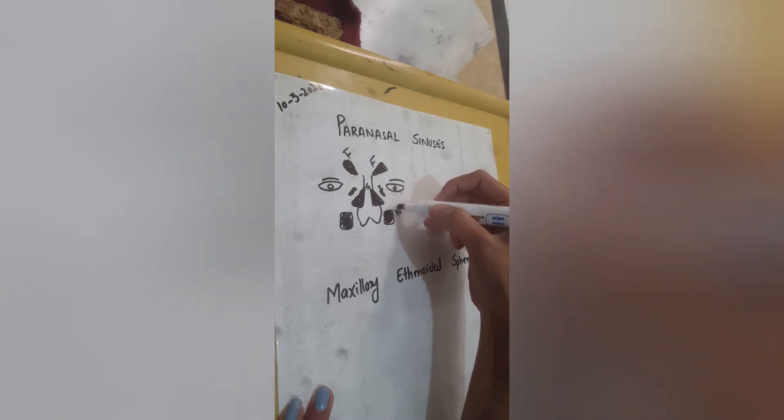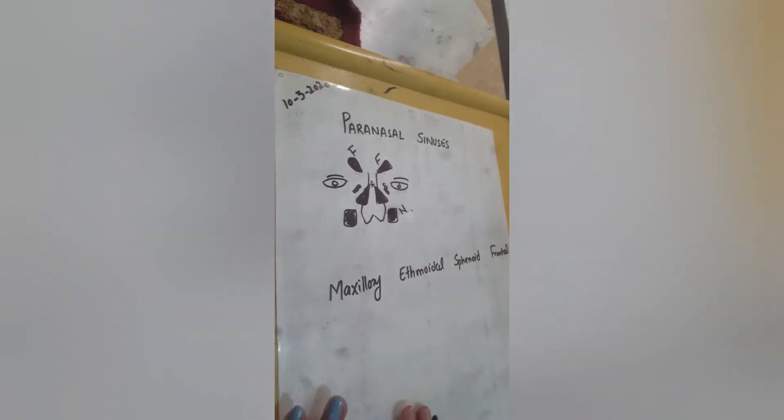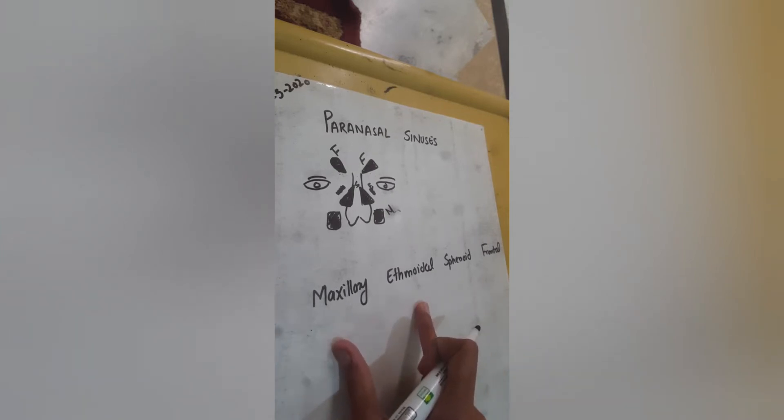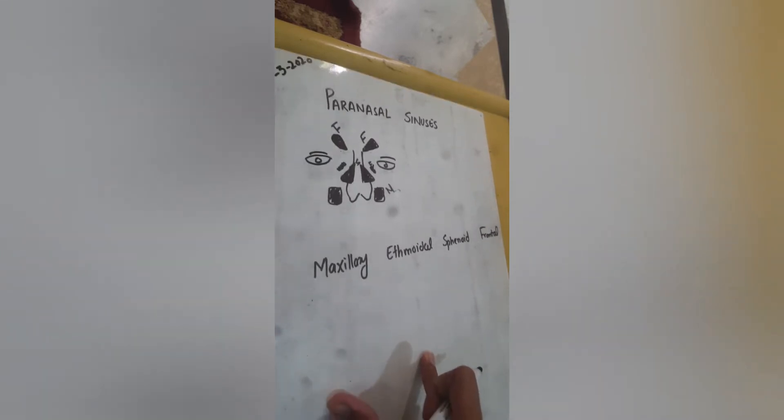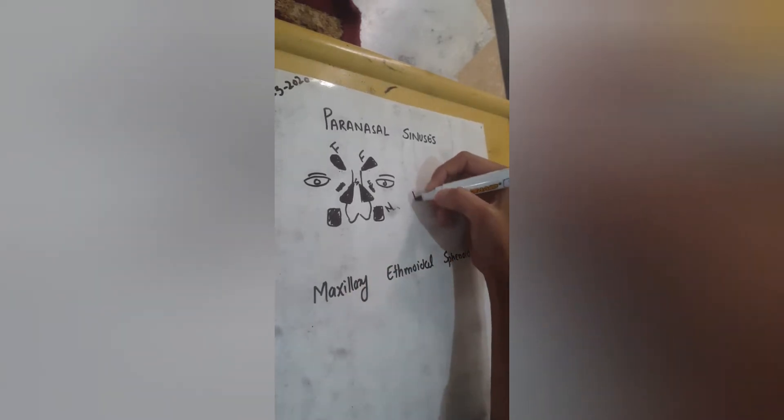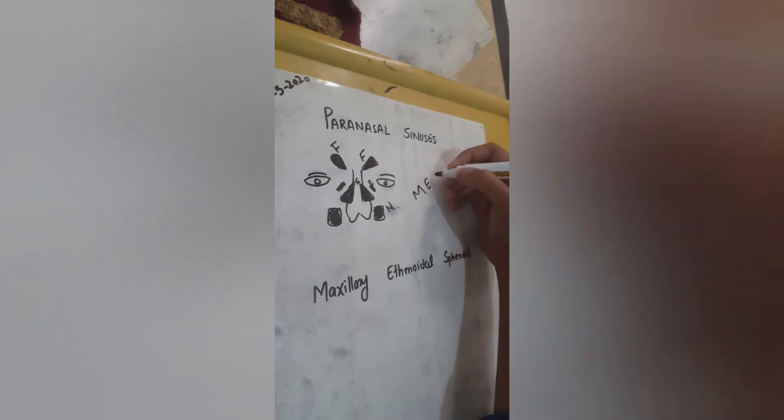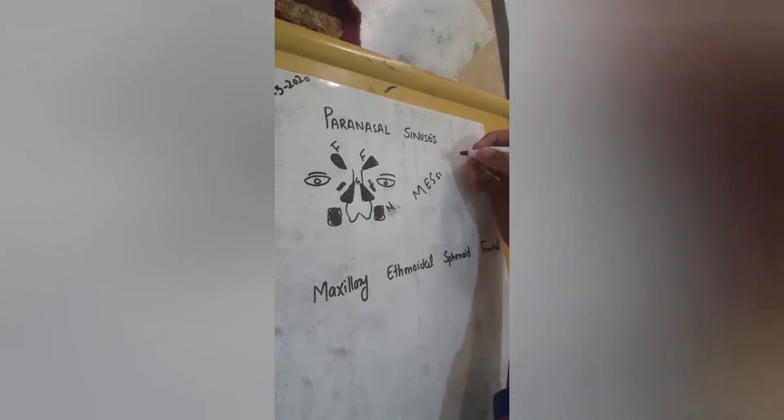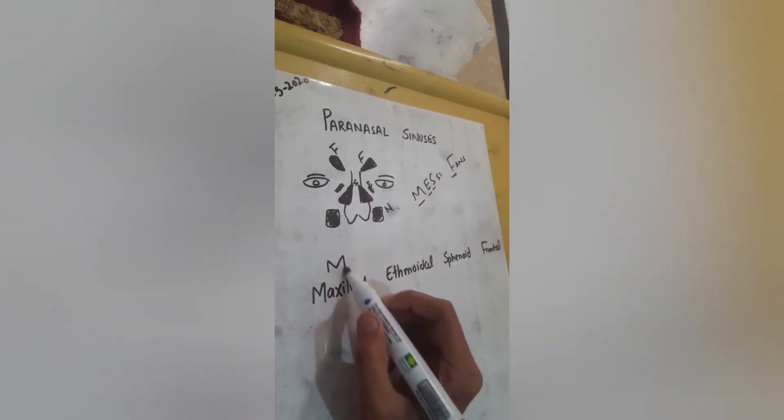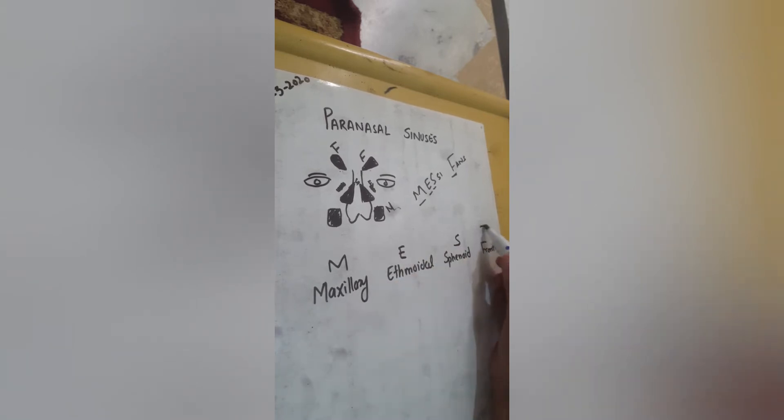This is the frontal one, this is the sphenoidal one, this is the ethmoidal, and this is the maxillary one. The thing I'm going to discuss today is the radiographical appearance of these four: at what age they appear on the radiograph and at what age they are present in our body. I have a mnemonic for this, that is MESF - messy fans. You have to remember M-E-S-F.